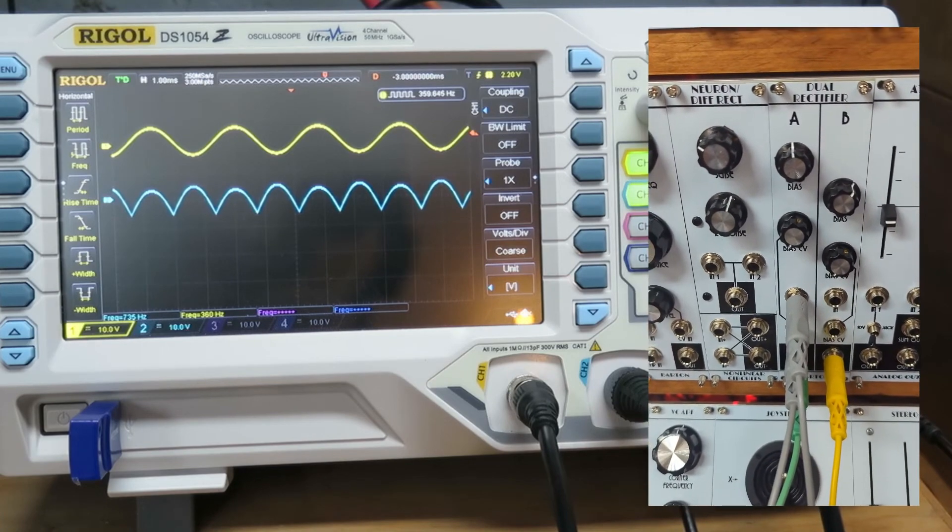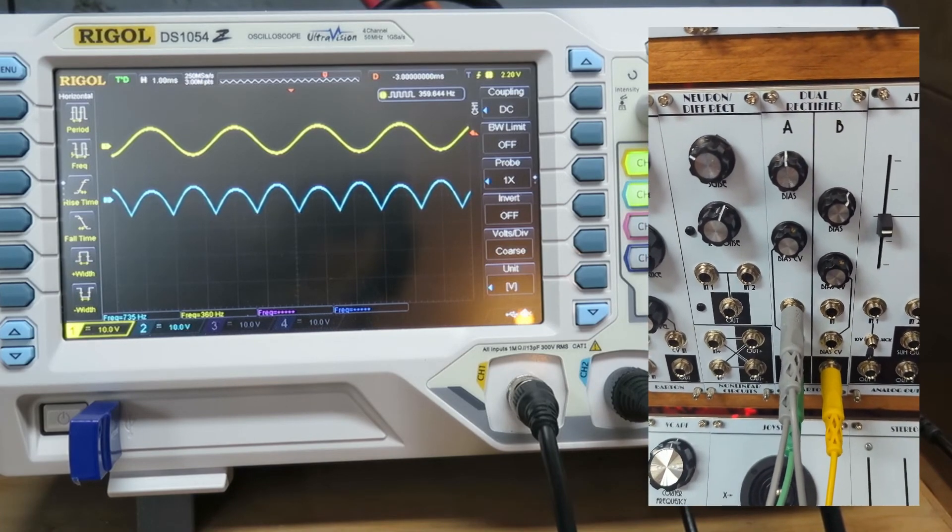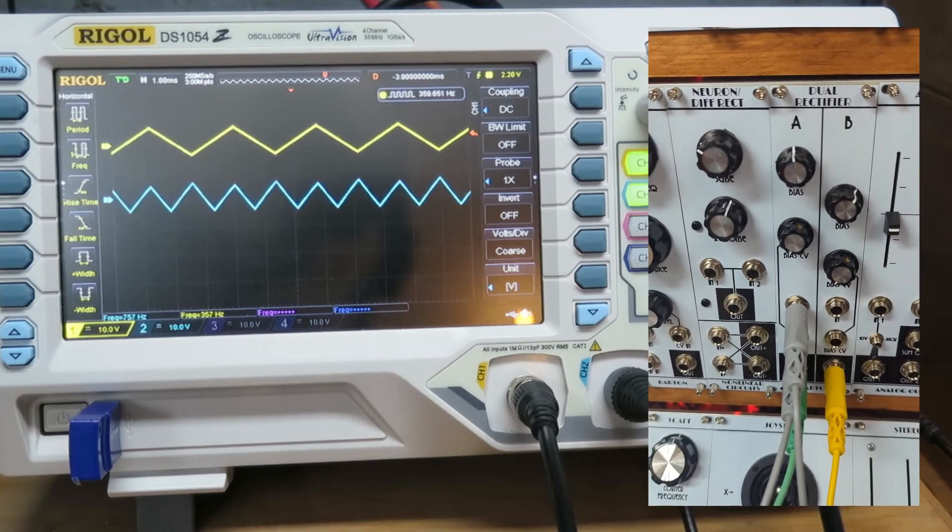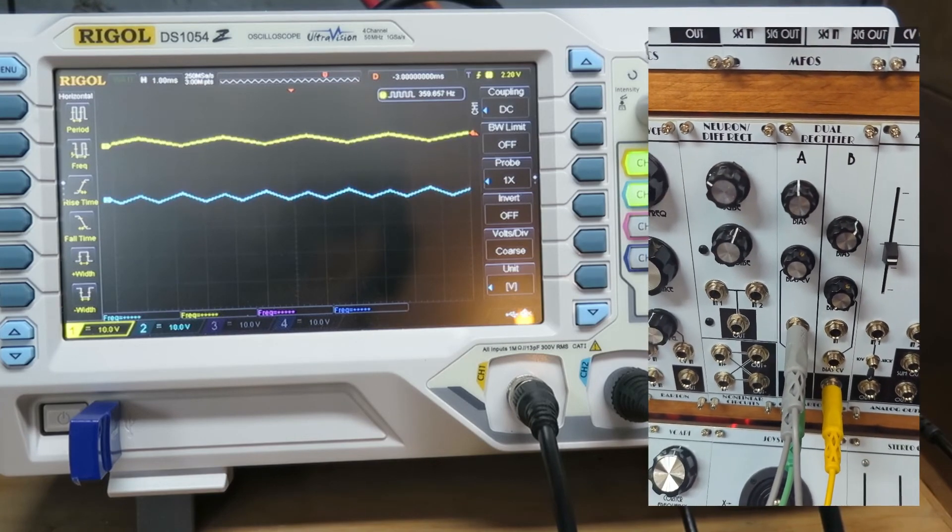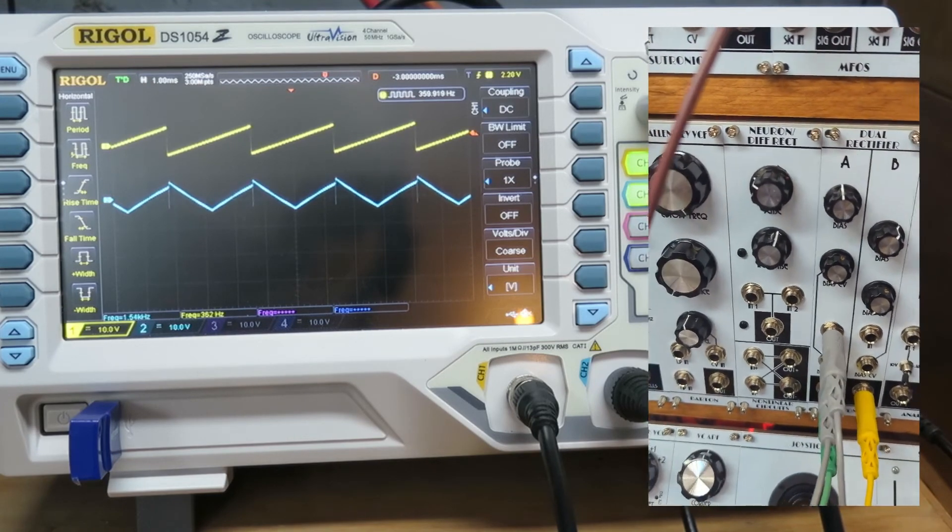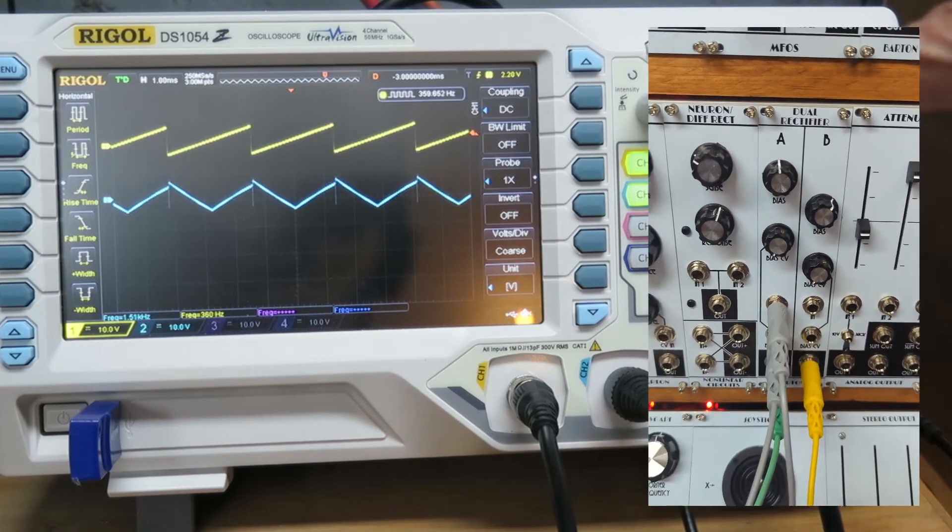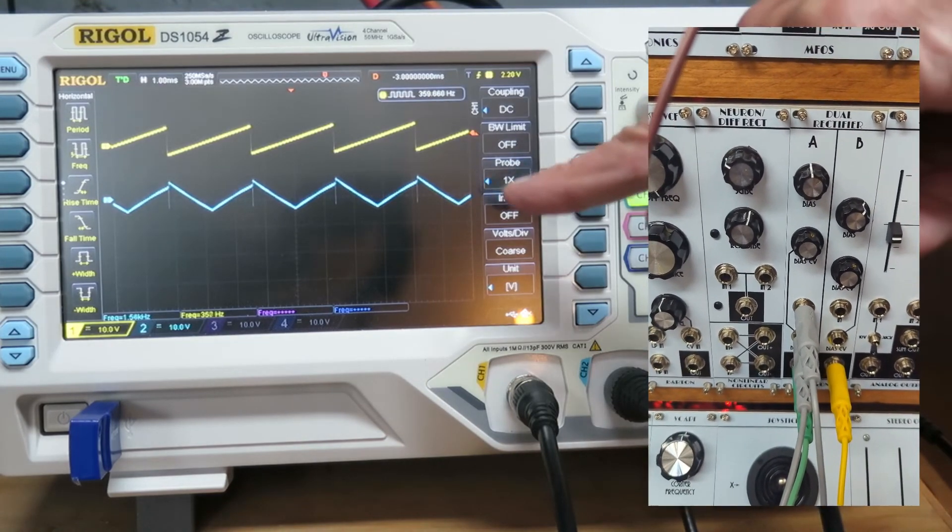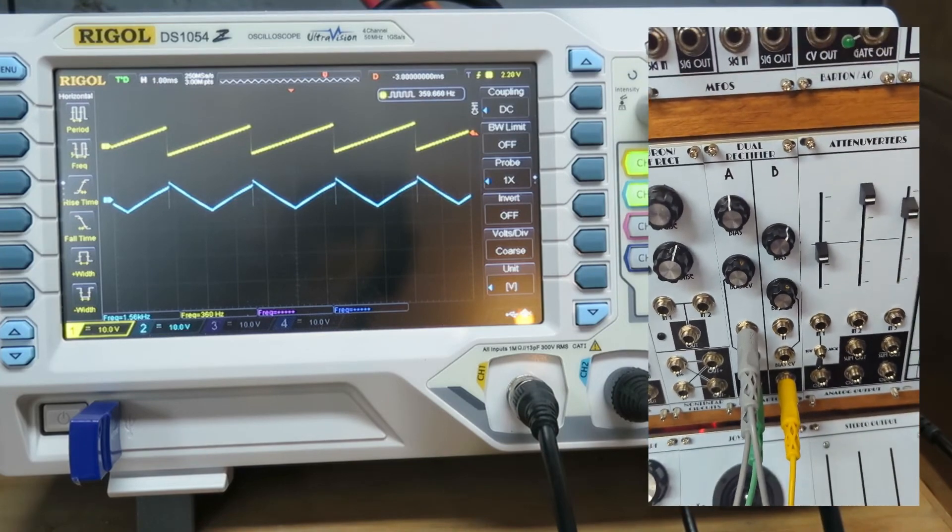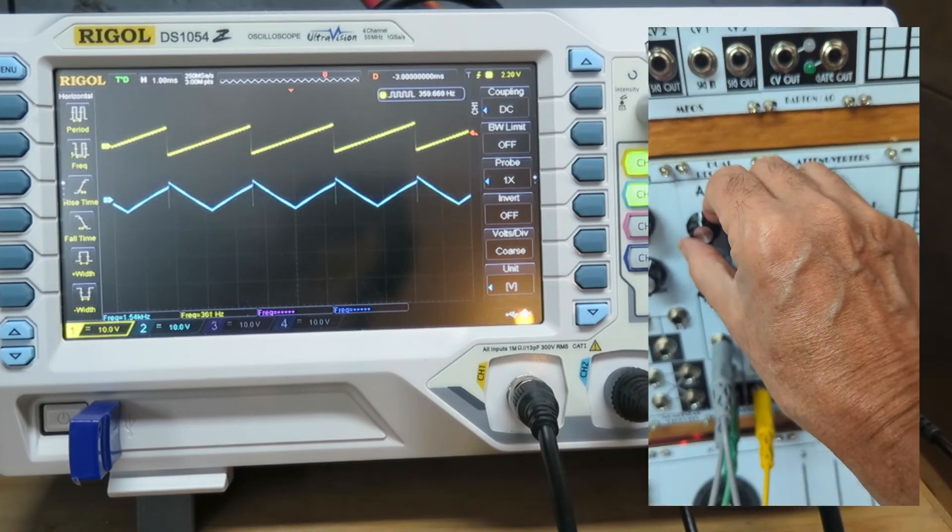And if we change it to a ramp wave, well now we don't even have frequency doubling going on. We've got the ramp wave just being converted into a triangle wave with the same octave.